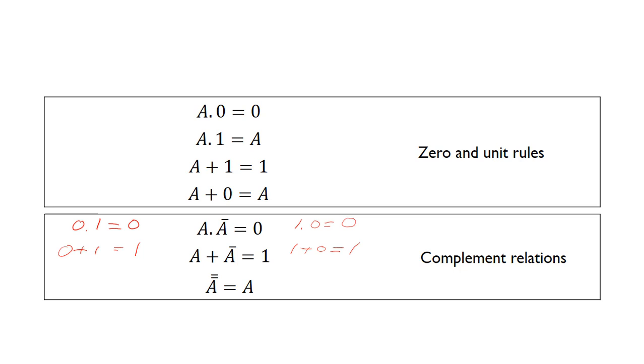And then we've also got A bar bar equals A, so that's double inversion, that just kind of cancels out. You imagine you've got a circuit with two NOT gates, one after the other, those NOT gates are going to cancel. If you put a 1 here, you'll get a 0 on the output, but then this will reinvert it back to a 1. So two NOT gates or two NOT operators, they'll just cancel out.